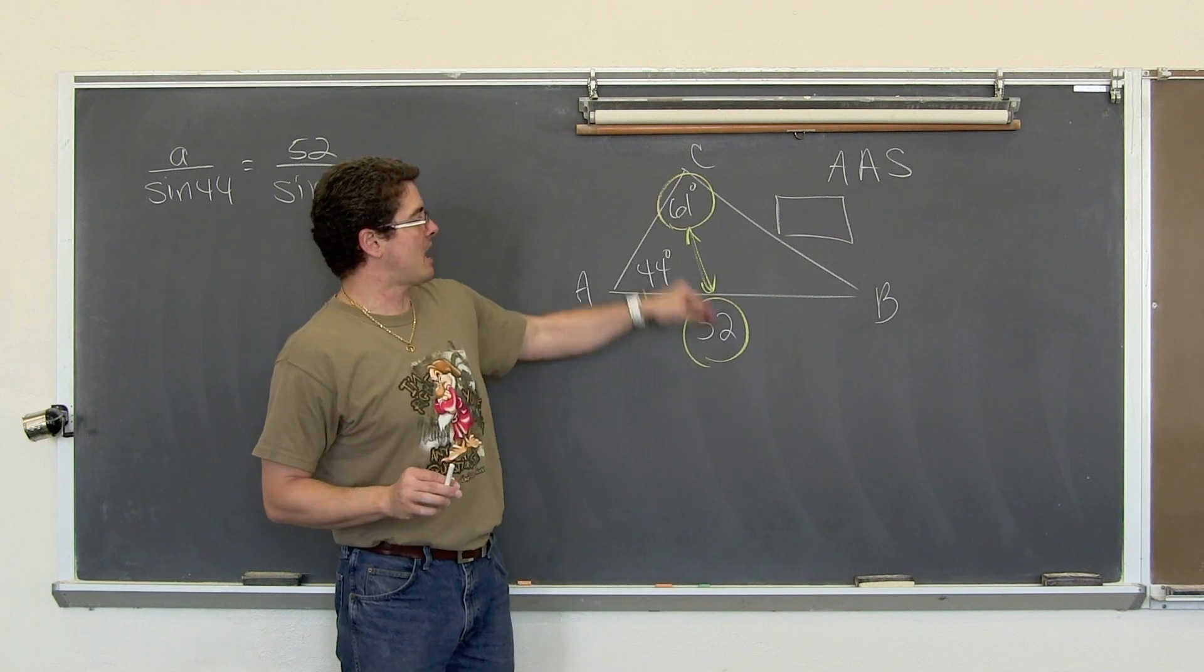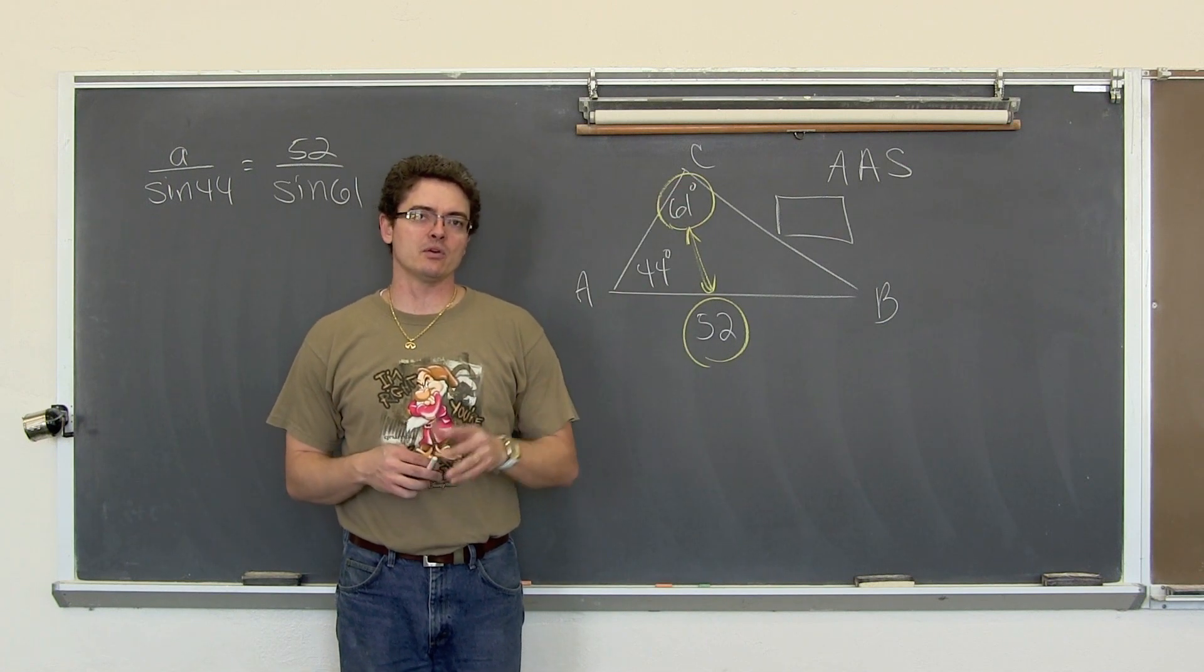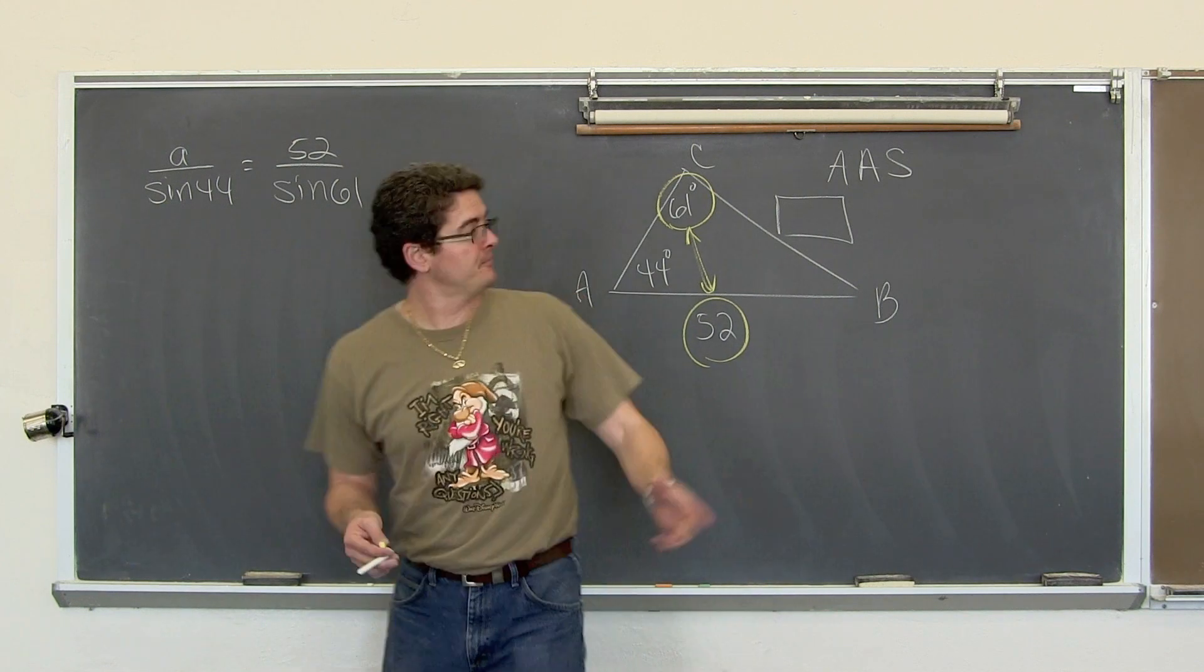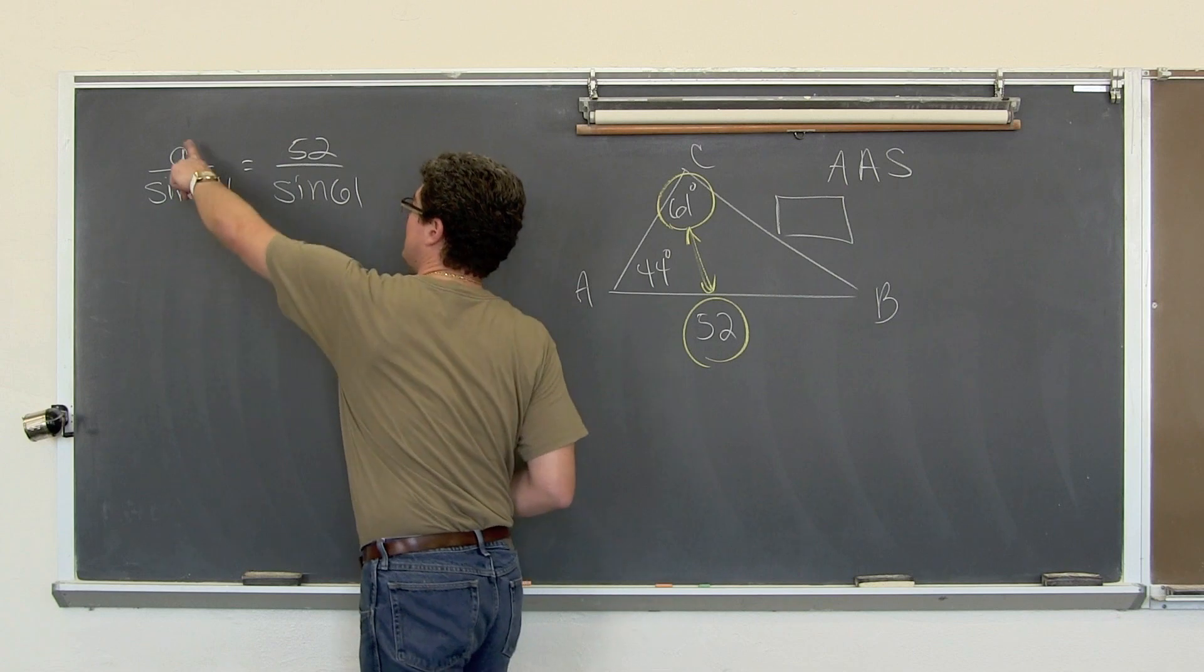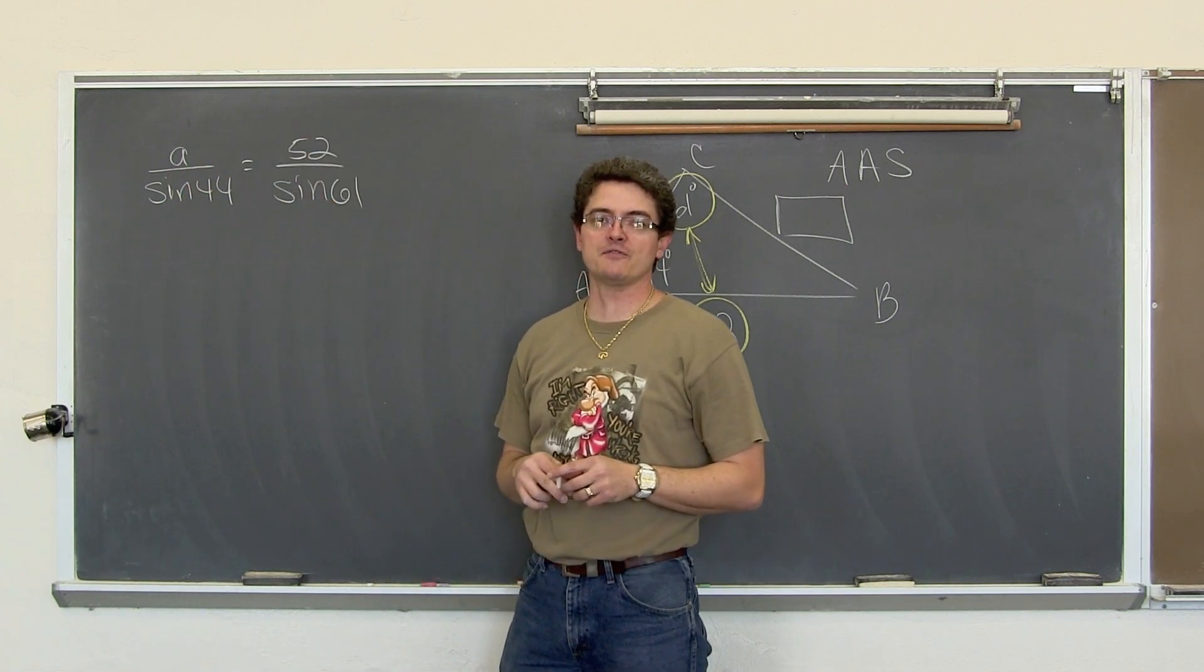Here we go. If you are going to set up the law of sine in an oblique triangle, you need to have a side and its corresponding angle paired up. You need both of those to be able to work out the law of sine.